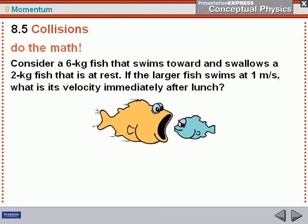The first problem we're going to look at is a collision between a six kilogram fish that's going to swallow a two kilogram fish. The six kilogram fish is swimming at one meter per second when it swallows the two kilogram fish that is at rest. The question is: what is the velocity of the six kilogram fish after it eats the two kilogram fish?